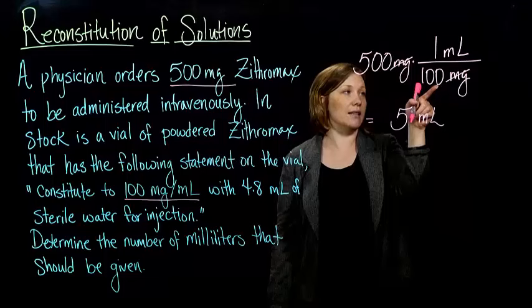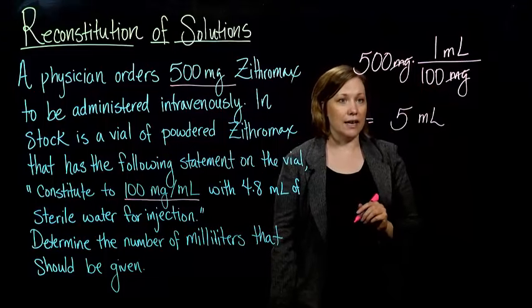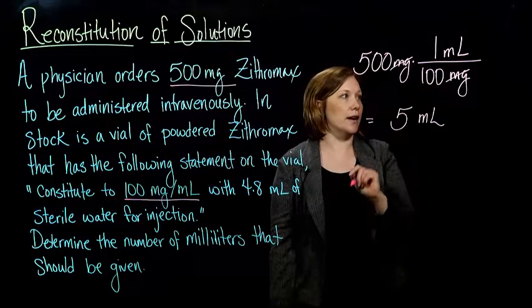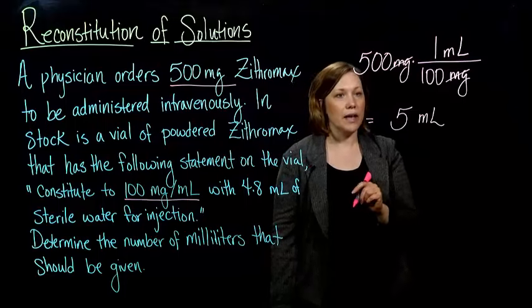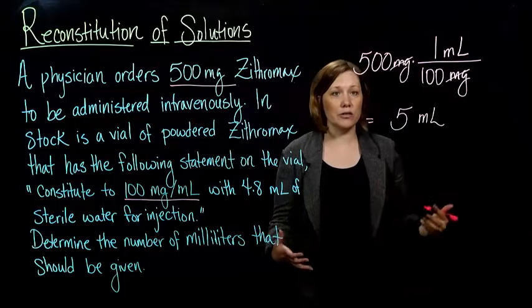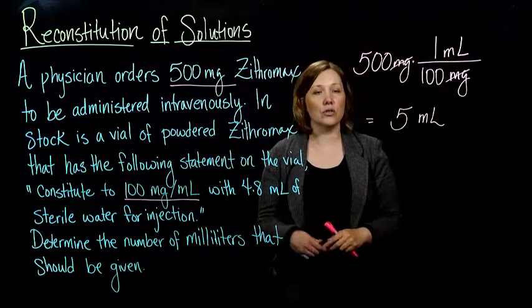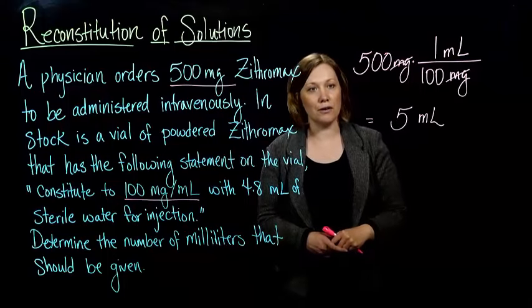We got the 5 by taking 500 and dividing by 100, so 500 divided by 100 gives you 5. And there we have it — we used dimensional analysis to solve a reconstitution dosage calculation problem.